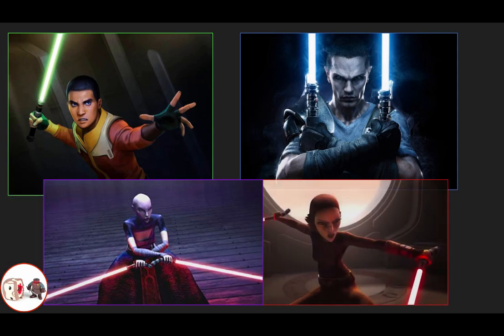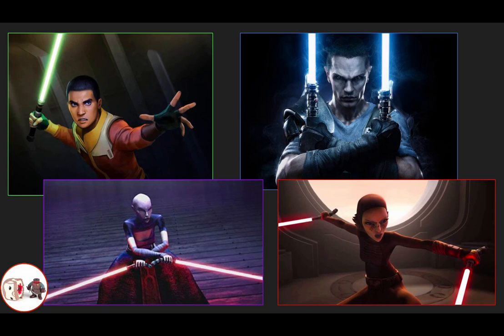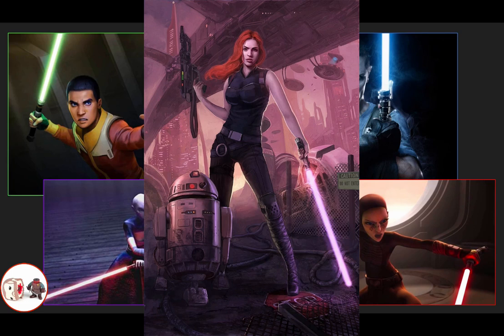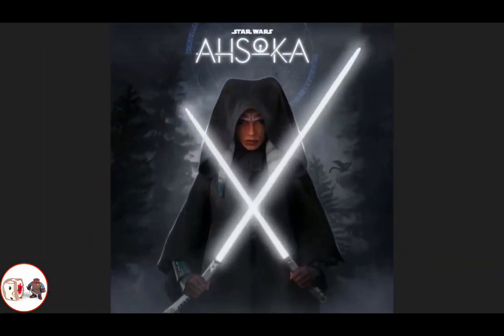And then we have Barriss Offee — this is probably the theory I'm leaning toward most right now. I think it just makes sense: she would be against Ahsoka, she's fluent with the Force, she had turned to the dark side, and the last time we saw her she and Ahsoka were fighting before she kind of just disappears. She's also the one who basically made Ahsoka quit the Jedi Order by framing her for the Jedi Temple bombing. For me right now, that would make the most sense if this Inquisitor is actually someone we know. I'd also love to see Mara Jade, but I just don't know how it would fit without bringing Luke in.